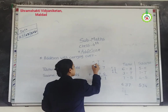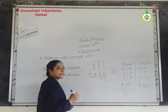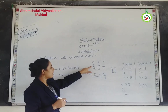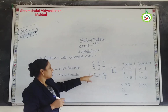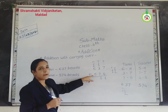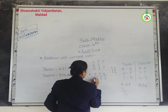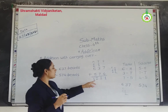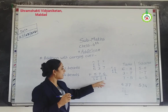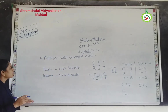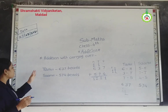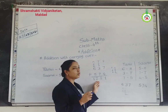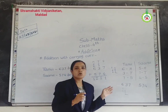Now add the hundreds place. We have carry 1, so one plus six equals seven, and seven plus five equals twelve. We get the answer one thousand, two hundred, eleven. Therefore, all beads of Tanvi and Sanvi together are one thousand, two hundred and eleven.